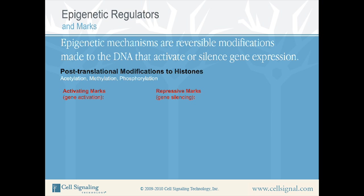These marks affect how tightly or loosely DNA is wound around the histone proteins and help to regulate transcription by allowing or denying access of transcription factors to the DNA. These marks are important because although each cell within the embryo contains a complete set of DNA, only a small portion of that DNA is actively being used to maintain pluripotency. Lineage-specific genes must be turned off until needed during differentiation.